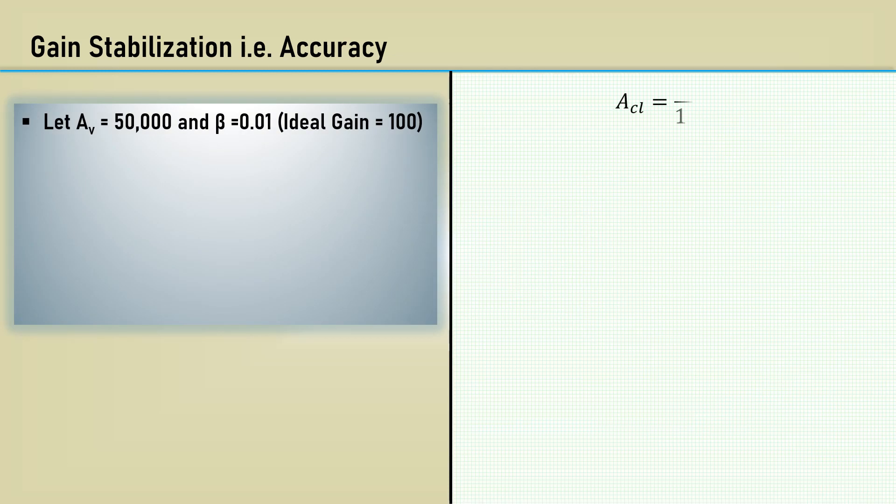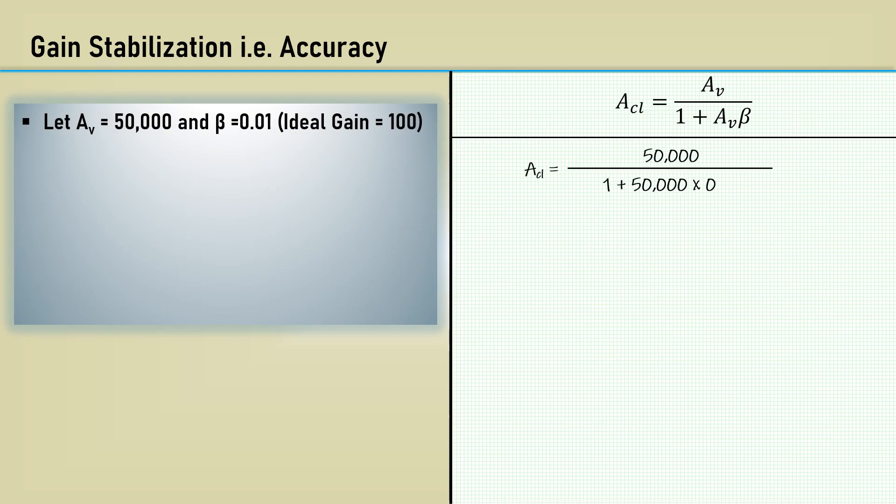Another important aspect of negative feedback is the ability to accurately control the gain of the amplifier — gain stabilization. When I say gain stabilization, I don't mean the amplifier is free from oscillation; I mean that the voltage gain is well controlled and accurate. Let's take a case where the open loop gain is 50,000 and the feedback factor beta is 0.01, which is a voltage gain of 100. Using the closed loop equation yields an actual gain of 99.8, very close to 100.